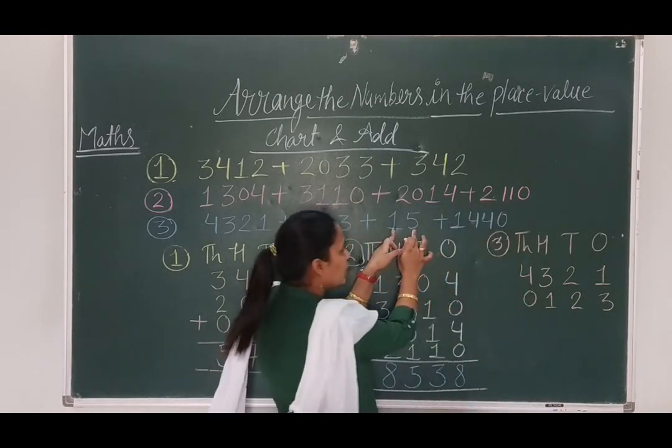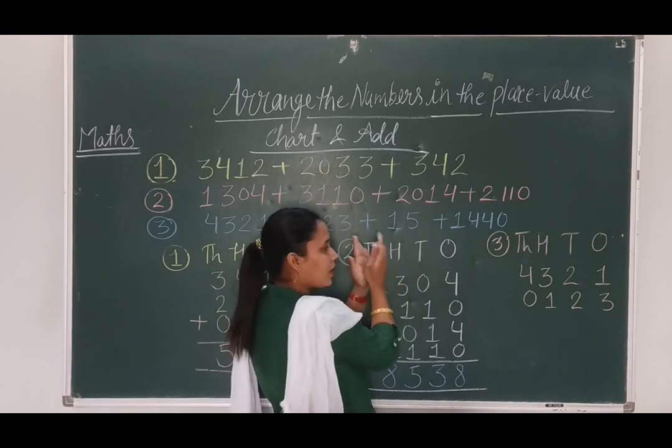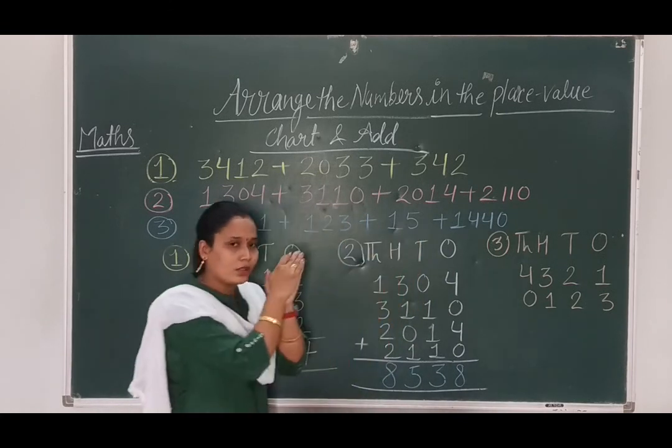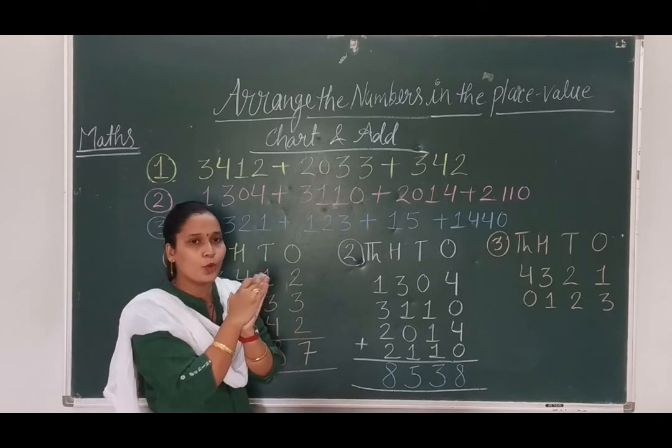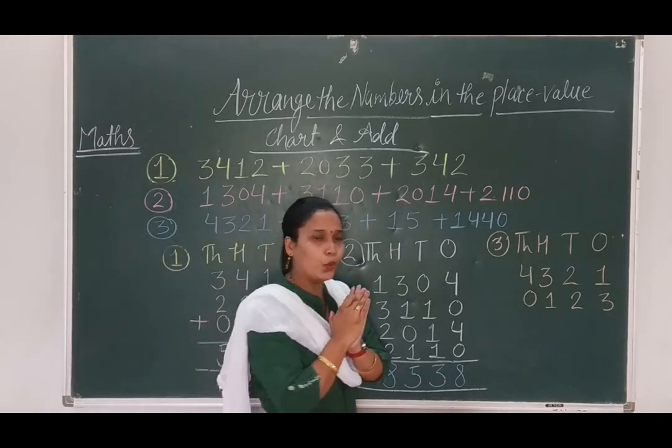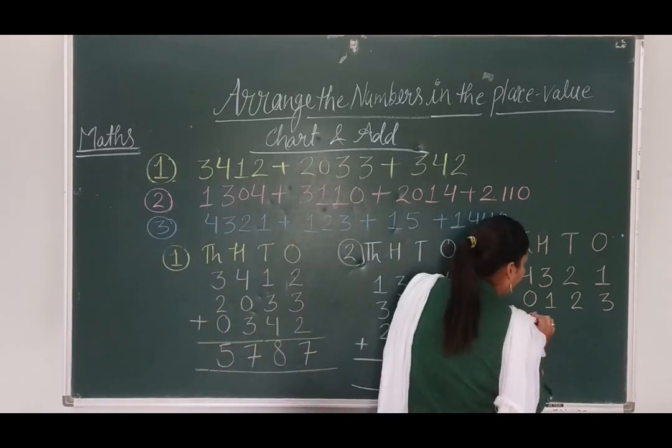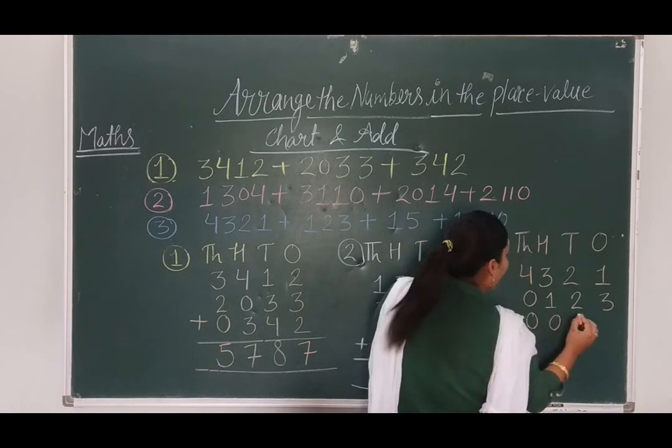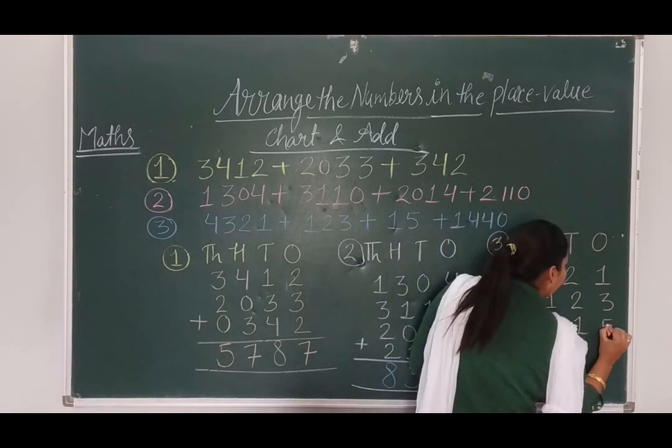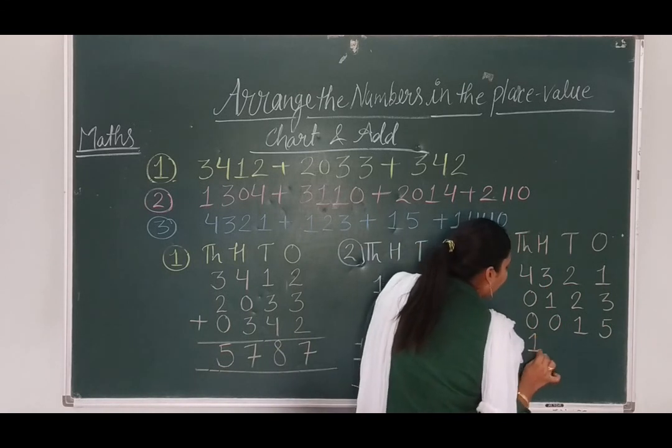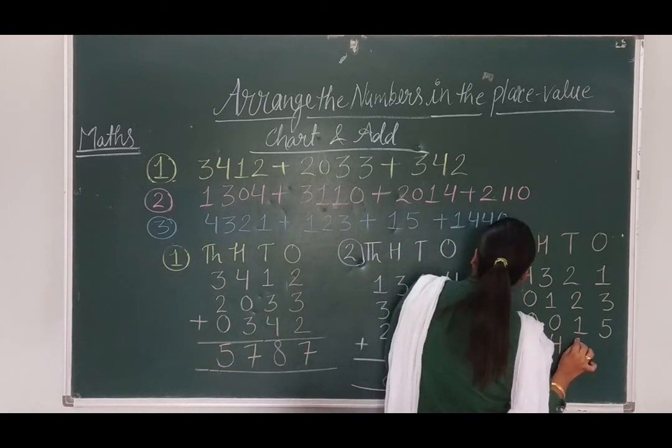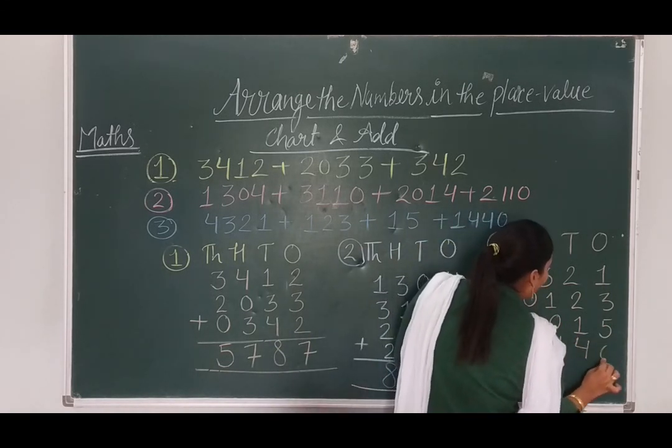Now, 15. Fifteen, ones and tens. Here, hundred place has also not given. And thousand place has also not given. So, both the places, we have to put 0. 0, 0, 15. One thousand, four hundred, forty.